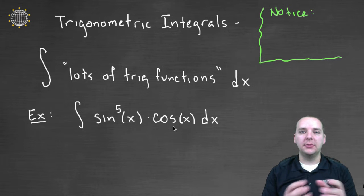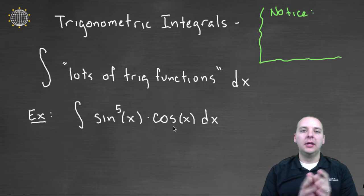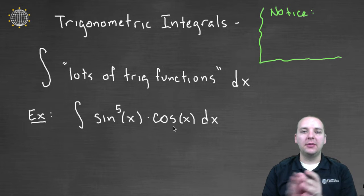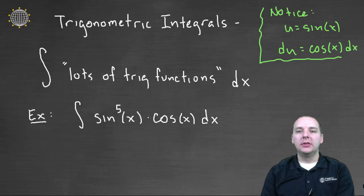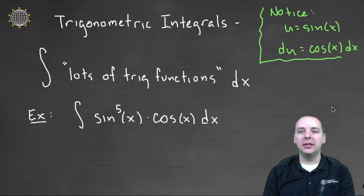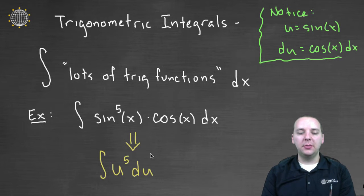If you have a tangent and you have a secant squared, well secant squared is the derivative of tangent. And here cosine is the derivative of sine, and that sort of thing. So notice if we made a u substitution here where we let u be the sine, we let du be the cosine, which it is, then this turns out to basically be an integral of u to the fifth du.